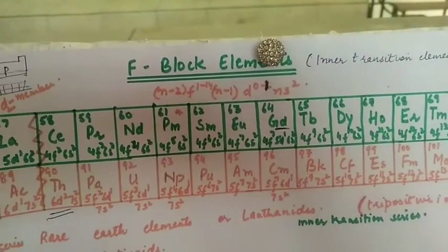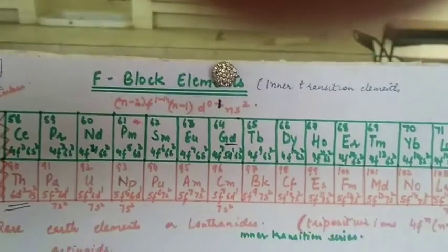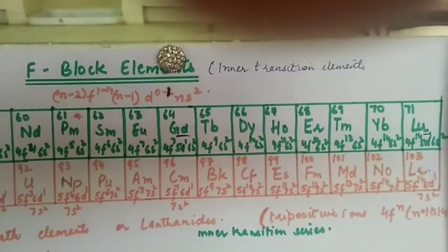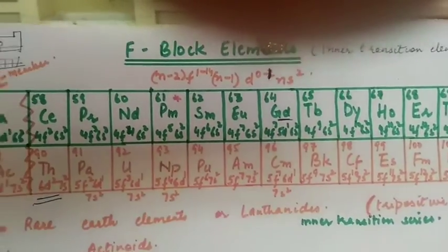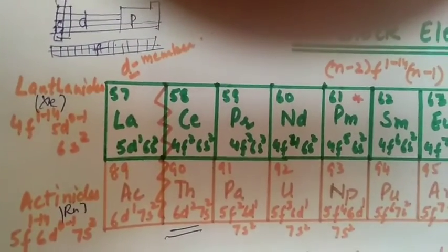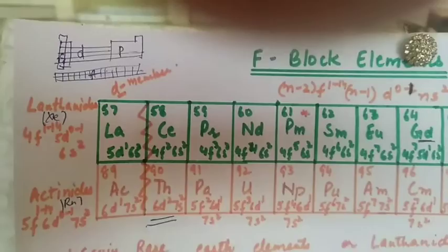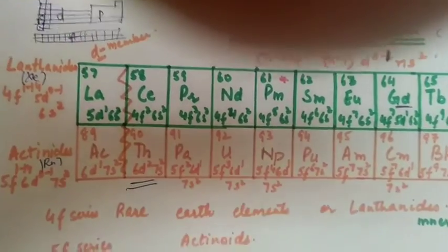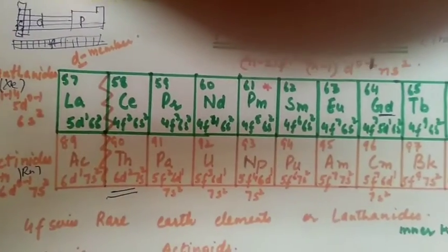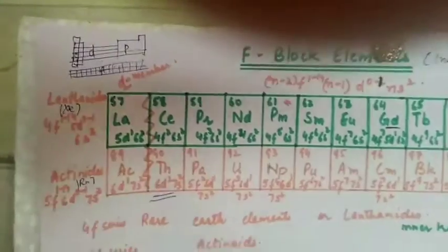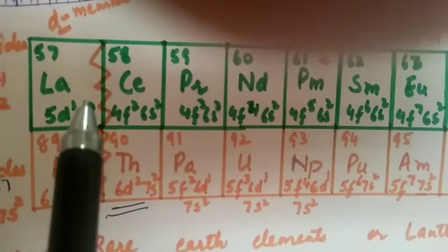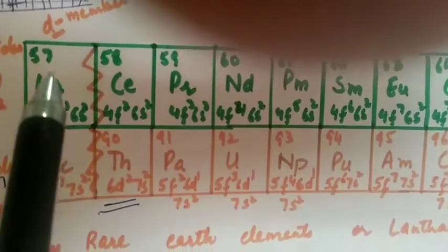In this way we have 14 elements because in f we have 7 orbitals and 14 electrons enter in the f-subshell. So there are 14 elements which are F-block elements. There are two series. In the first series, 4f electrons are entering, and in the second series, 5f electrons are entering.